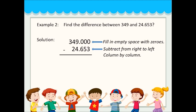Since we have 349.000, we have to borrow. Borrow one from nine — it will be eight, and the next number will be 10. Borrow one again — it will be nine, and the next number will be 10. Borrow again — the number will be nine, and the last number is 10. So: 10 minus 3, 9 minus 5, 9 minus 6, and 8 minus 4. The final answer is 324.347.